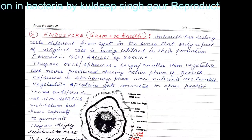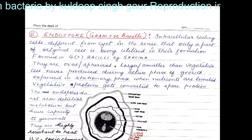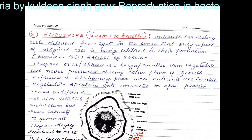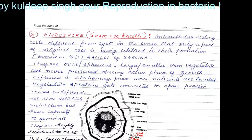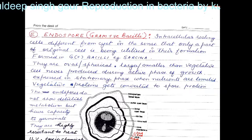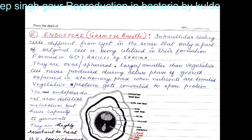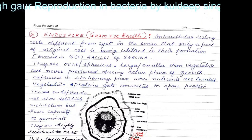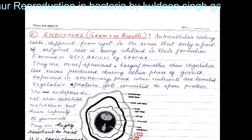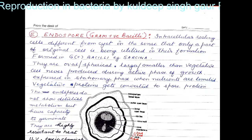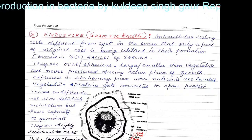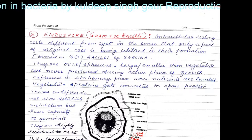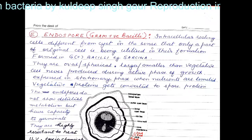Then comes endospore formation, which is mainly exhibited by gram-positive bacilli. However, endospore formation is actually not a mode of asexual reproduction. In fact, it is the phenomenon of perennation or survival of the bacterial cell. In endospore formation, an intracellular resting cell is formed, different from cysts in the sense that only a part of the original cell is utilized in their formation. This kind of endospore is formed in bacilli, for example Sarcina.